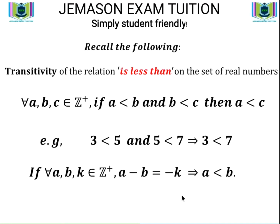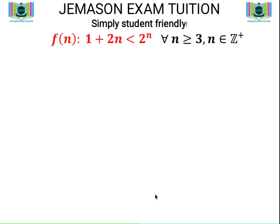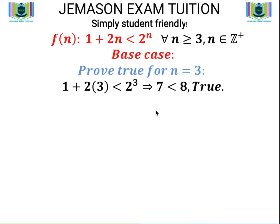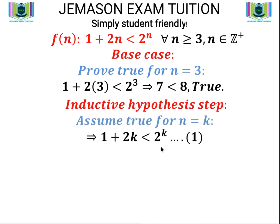These notions about the less than relation are needed for the proof by mathematical induction. The statement says: prove that 1 + 2n < 2^n for all n ≥ 3, n being an element of positive integers. We start with the base case, proving the statement is true for the smallest value of n, which is 3. Substituting n = 3: 1 + 2×3 < 2^3, which gives 7 < 8. The statement is true for the base case n = 3.